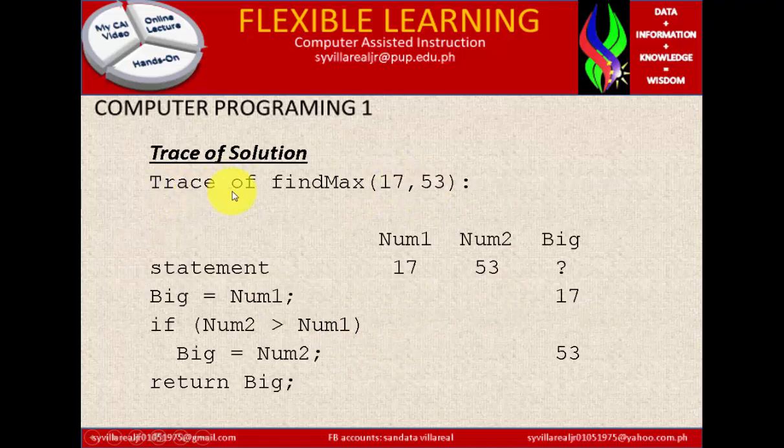Next, trace for solution. Trace of findmax. So we have 17 and 53. Num1 is 17, Num2 is 53. What is big? Now on the statement, big is equals to num. So we have 17. If num2 is greater than num1, then big is equals to num2. That is 53. Then return big.